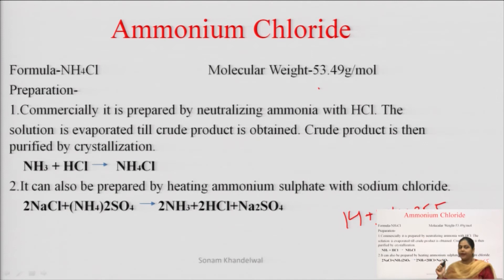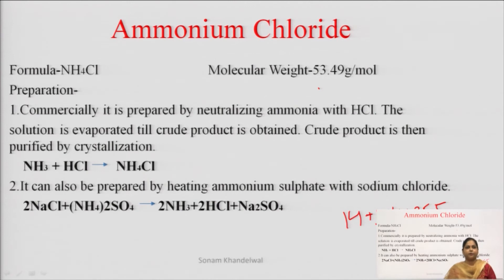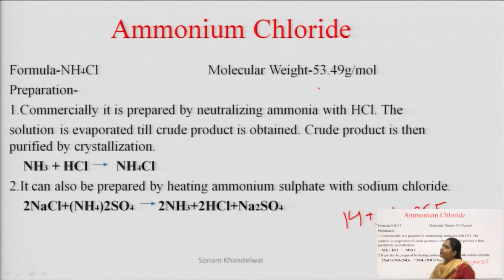One thing I would like to tell you here is that when we synthesize a compound, the crude product means that impurities are more — then we remove the impurities. Crystallization means that we create crystals; when we create crystals, then the impurities are removed and we get the product. So this reaction: ammonia NH3, which we react with hydrochloric acid, then we get ammonium chloride. This is a commercial preparation.